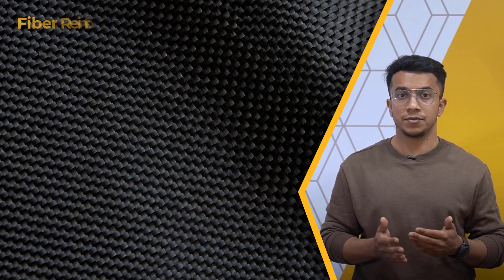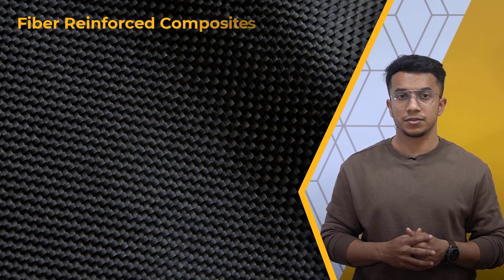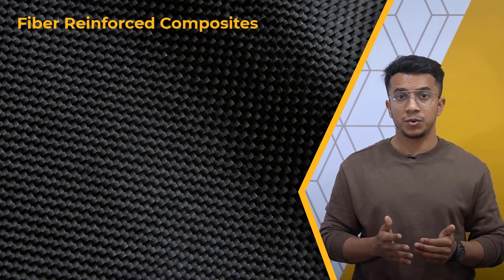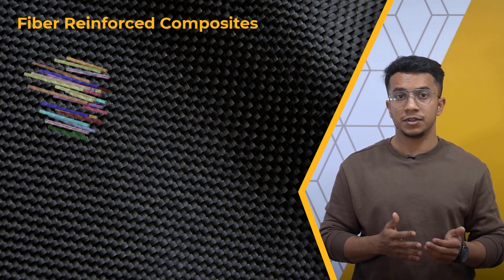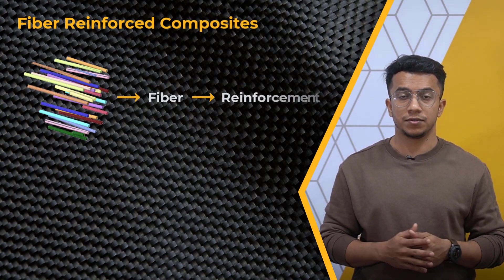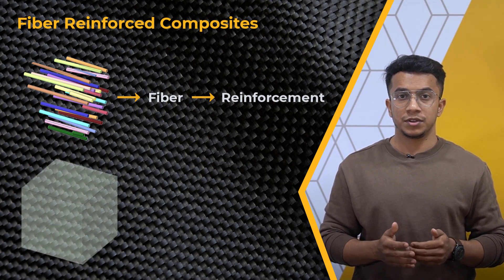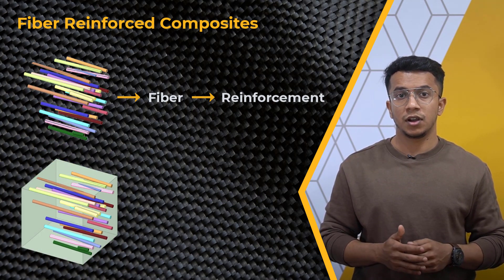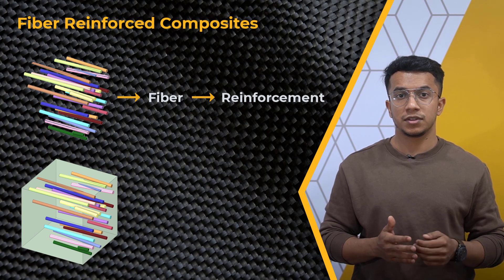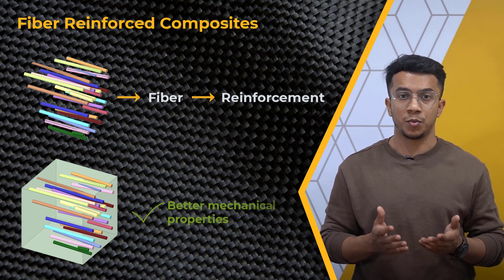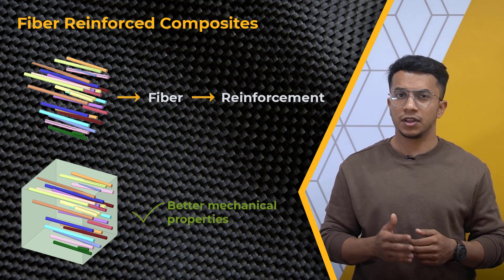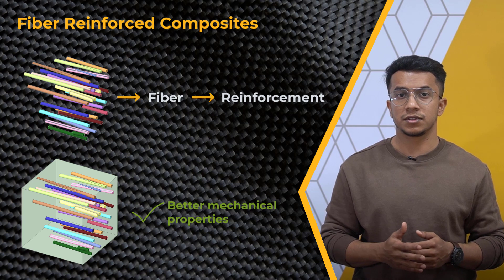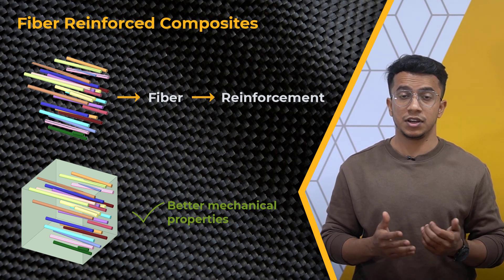Let's shift our attention to the other major type of composite: fiber reinforced composites. In this composite, fiber is used as a reinforcing material for the matrix. When the matrix and fiber are joined, composite materials have significantly better mechanical properties than when the matrix and reinforcing materials are utilized individually.